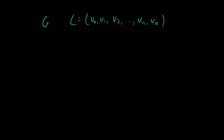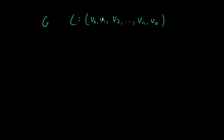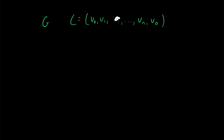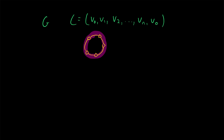If we delete any vertex from this Hamiltonian graph G, the resulting graph will contain a Hamiltonian path. For example, if we delete V0, then the part of the cycle going from V1 to Vn is a Hamiltonian path in G minus V0. If we delete V1, then the path from V2 up to Vn and then V0 is a Hamiltonian path in G minus V1. If we delete V2, then the path following V2's position going to V0 and then V1 is a Hamiltonian path in G minus V2.